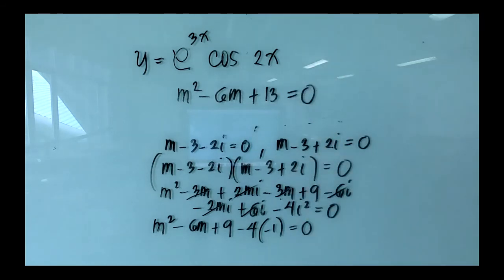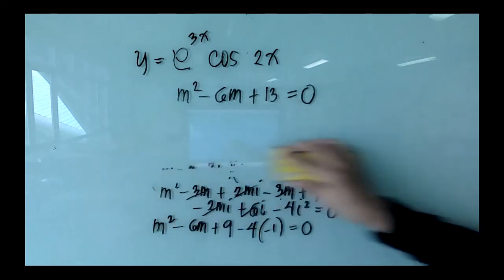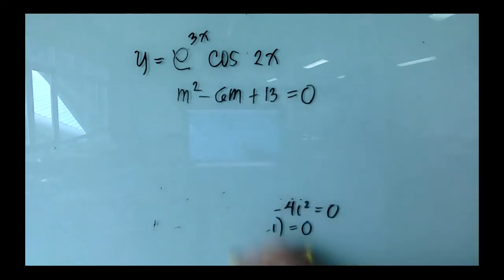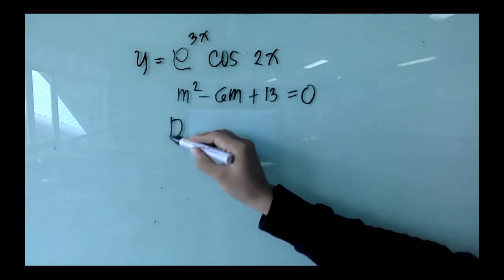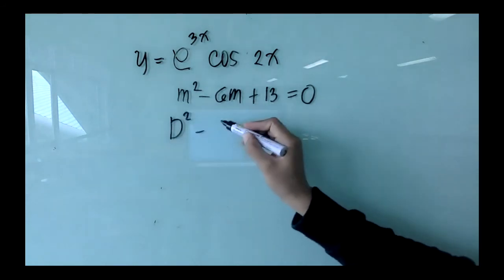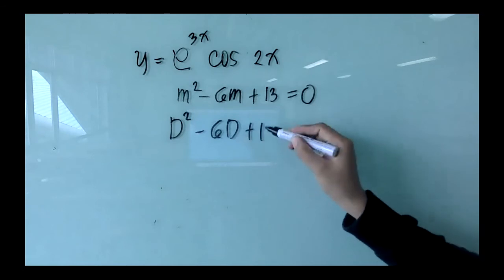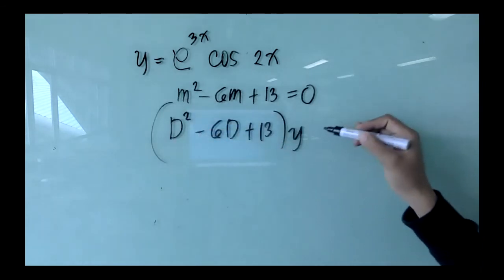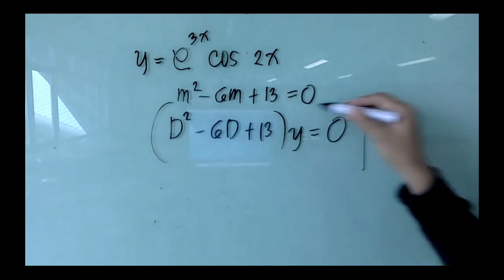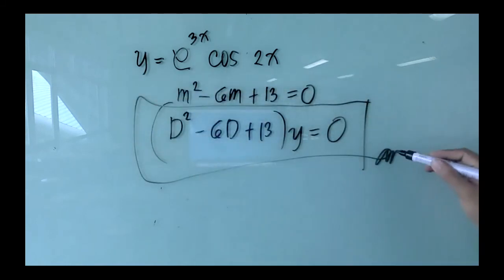Replacing m by the differential operator d, the differential equation becomes (d² - 6d + 13)y = 0. This is the homogeneous differential equation for example C.